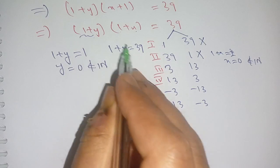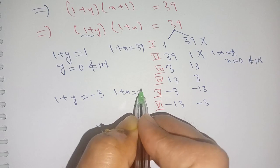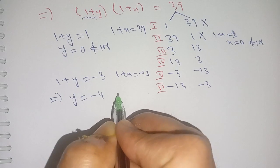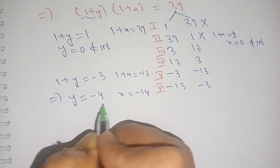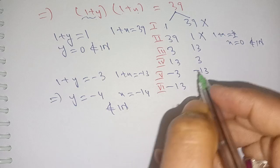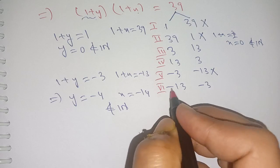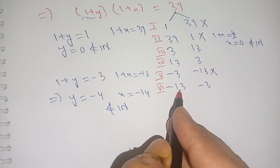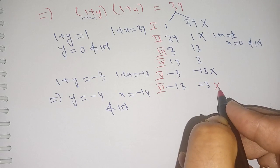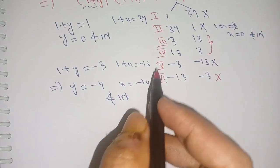For cases 5 and 6, when 1 plus y is equal to minus 3 and 1 plus x is equal to minus 13, we get y is equal to minus 4 and x is equal to minus 14. Since x and y must belong to the natural numbers, these negative values are rejected. Similarly, when 1 plus y is equal to minus 13 and 1 plus x is equal to minus 3, this case is also rejected.